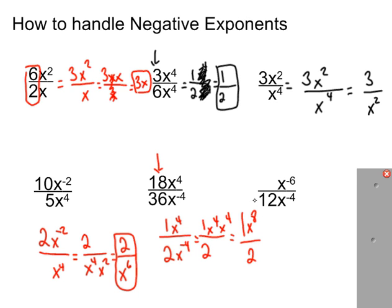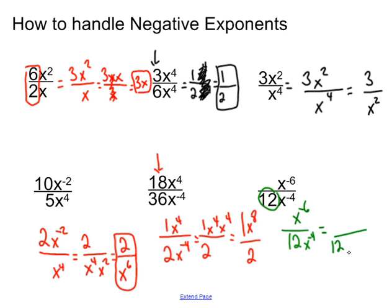For the last one, the coefficient can't be simplified, so it stays on the bottom. We have x to the negative 6th on top and x to the negative 4th on the bottom. Both are unhappy, so we rearrange them: x to the 6th goes to the bottom, and x to the 4th goes on top. Remember — we don't cancel until everybody is happy. The 12 stays on the bottom. We end up with x to the 4th on top over 12x to the 6th on the bottom, which simplifies to 1 over 12x squared.